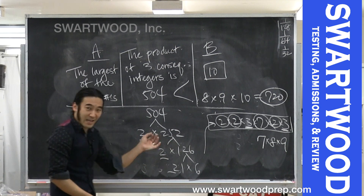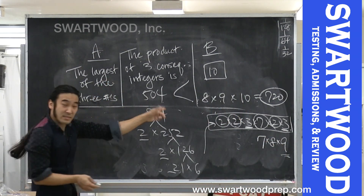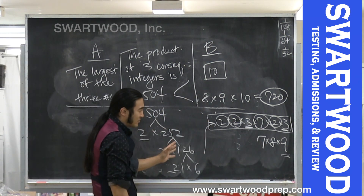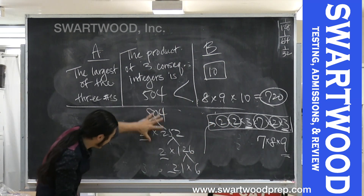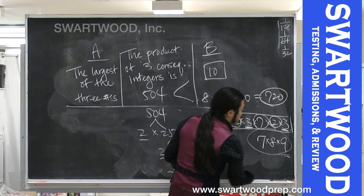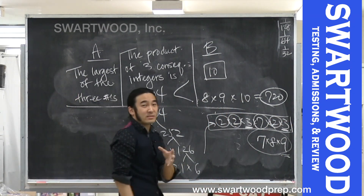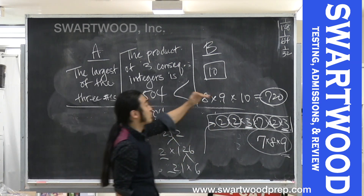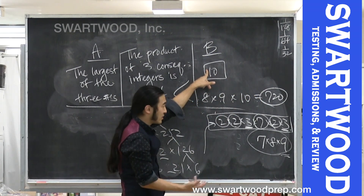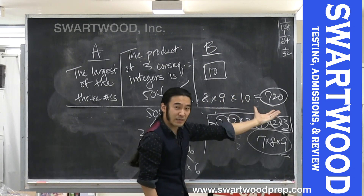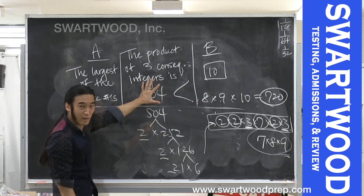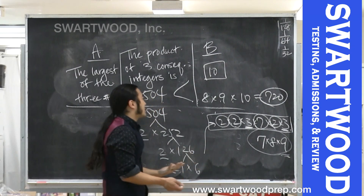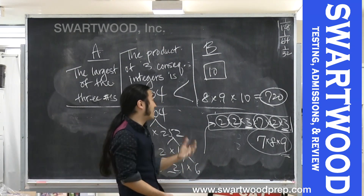So the three consecutive integers are 7, 8, and 9, and the largest is 9, which is less than 10 — confirming Column B wins. However, this factoring method involves guessing and eyeballing, and could be more time-consuming. The strategy approach is much faster: since 10 × 9 × 8 = 720 is clearly bigger than 504, the largest integer must be less than 10. That beats trying to factor or solve a cubic equation.